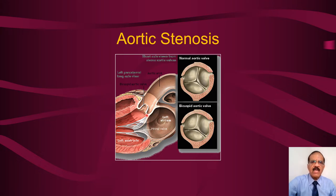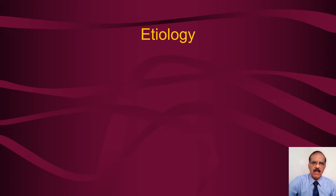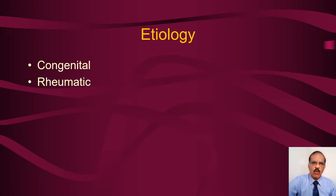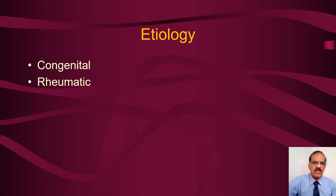Whenever there is aortic valve disease, it could result in stenosis, regurgitation, or sometimes both. The etiology of aortic stenosis: it could be congenital in the form of bicuspid aortic valve disease, or it may be rheumatic — and when rheumatic, it is usually in addition to mitral valve disease. The clue is: if somebody has aortic valve disease and also mitral valve disease, it is likely rheumatic. If it is isolated aortic stenosis, especially with bicuspid disease on echo, it will be congenital.